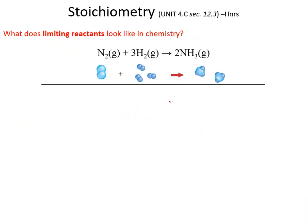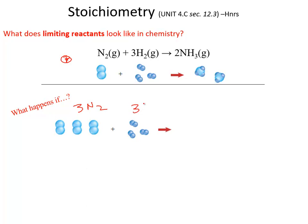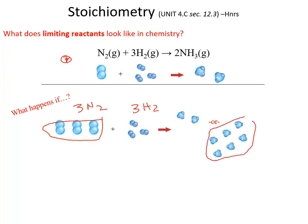Limiting reactants in chemistry looks like this. We're going to review the Haber process again, where one mole of nitrogen gas reacts with three moles of hydrogen gas to produce two moles of ammonia. At the microscale, that's one molecule of nitrogen gas and three molecules of hydrogen gas creating two molecules of ammonia. What if you had three molecules of nitrogen gas and three molecules of hydrogen gas? One nitrogen makes two ammonia, so three nitrogen could make six. But three sets of hydrogen only make two sets of ammonia.